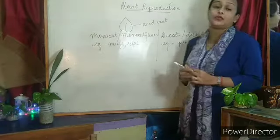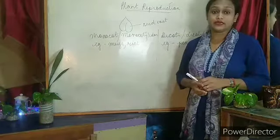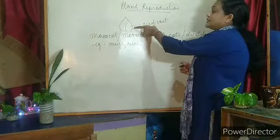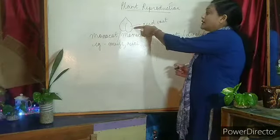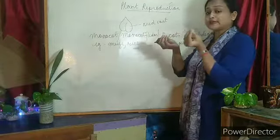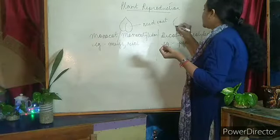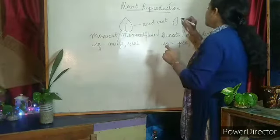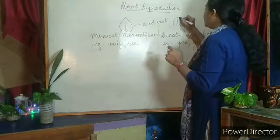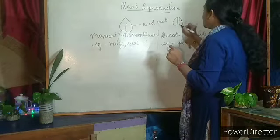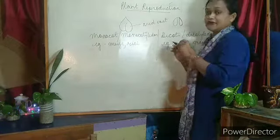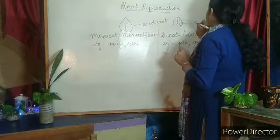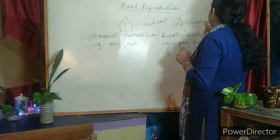You may be asking what is a cotyledon. As I mentioned, the seed consists of an outer covering called the seed coat. When you peel the seed coat — suppose I am peeling off the seed coat of the gram seed — after peeling it, I will find two leaf-like structures inside. These leaf-like structures are known as cotyledon.